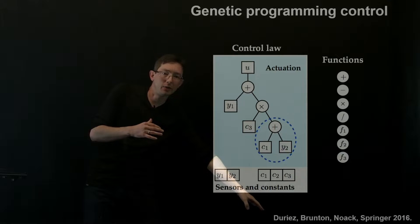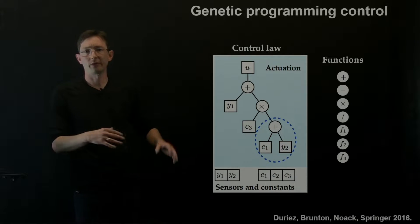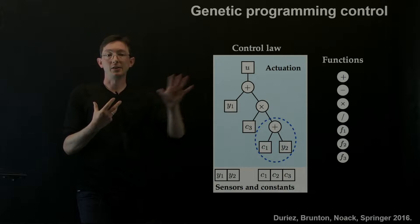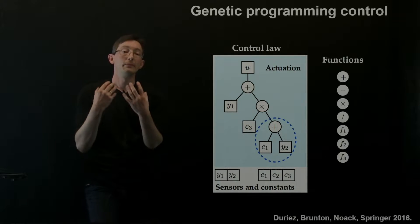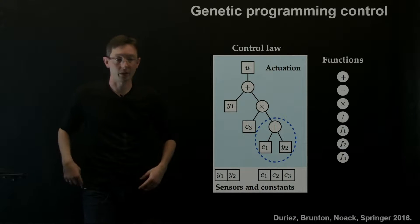And what this does is it simultaneously learns the structure and parameters of an effective control law. And so you can read more about this in a book by Tomas Duryea, myself, and Barrett Nowak, the Springer book from 2016 called Machine Learning Control, where we essentially developed this theory of how to use genetic programming to design effective control laws. And then also how do we apply this to turbulent control experiments?